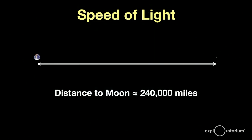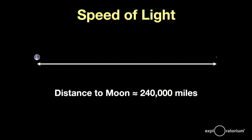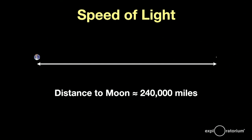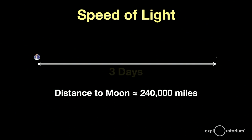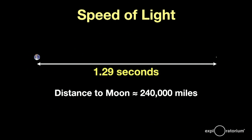Consider that light can travel around the earth more than seven times in one second. What you see here is a proper scale model of the earth-moon system — both earth and moon are properly sized at the correct distance. It took the Apollo astronauts three whole days to reach the moon; it takes light about 1.3 seconds to cover the same distance.